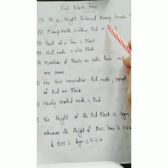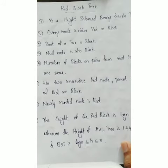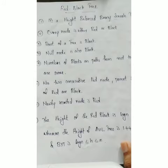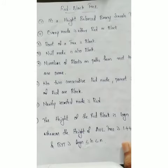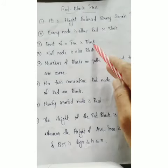Every node in a red-black tree is colored either red or black. That is why it is called a red-black tree. If the node is the root, it is always black.